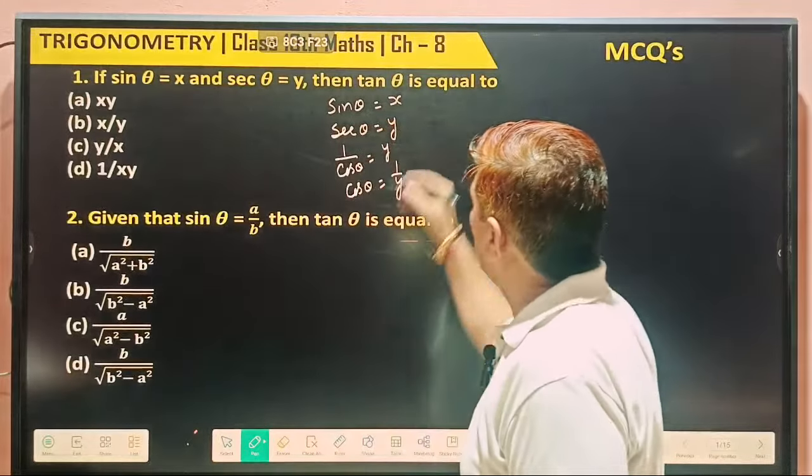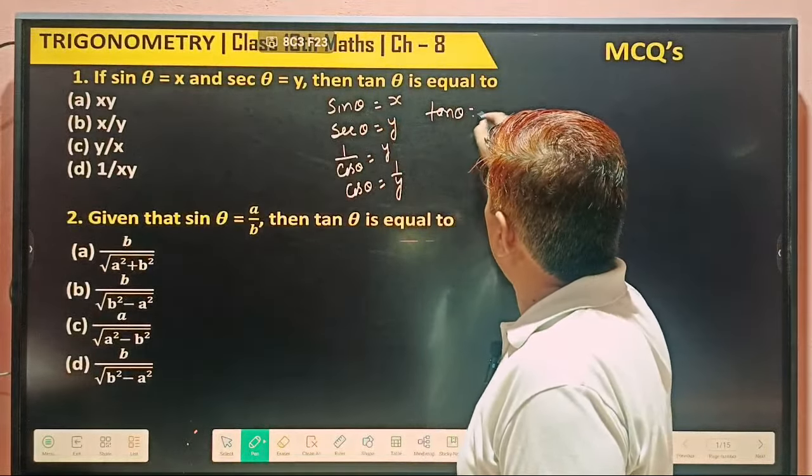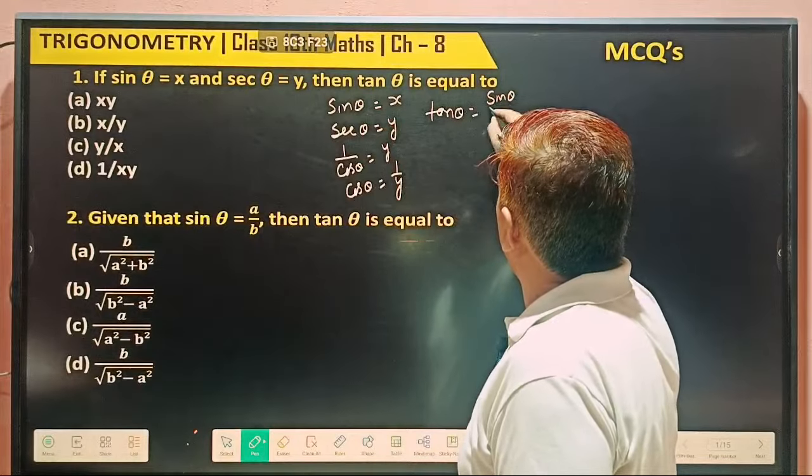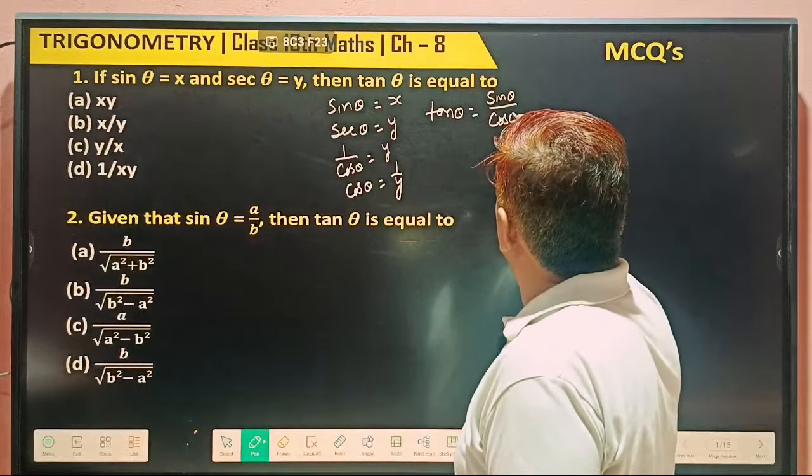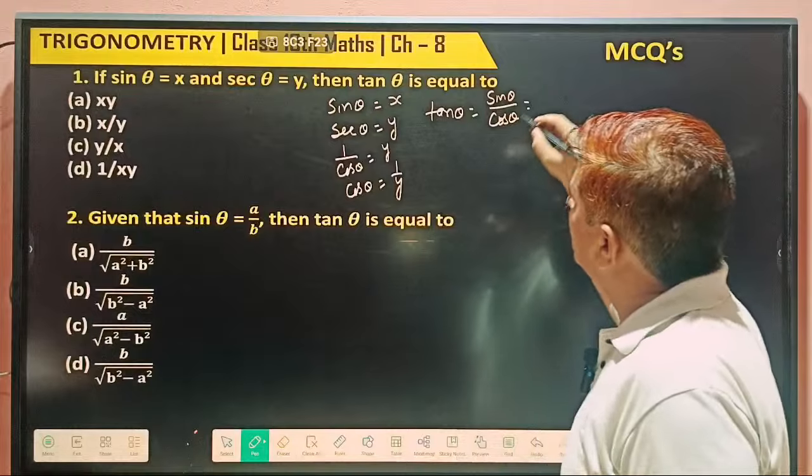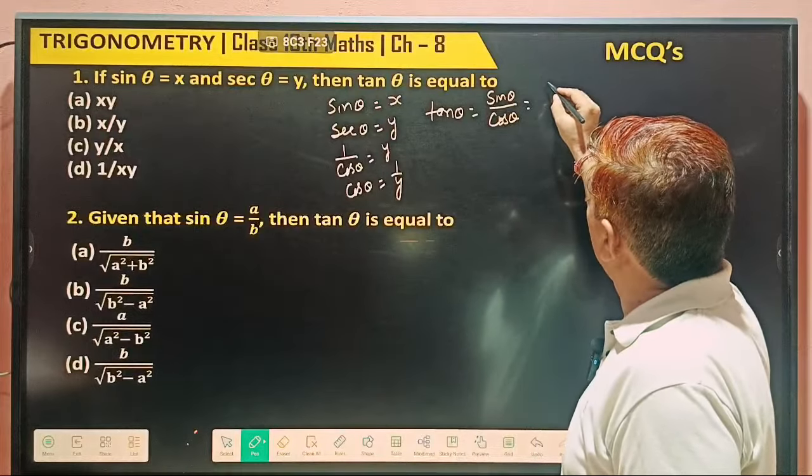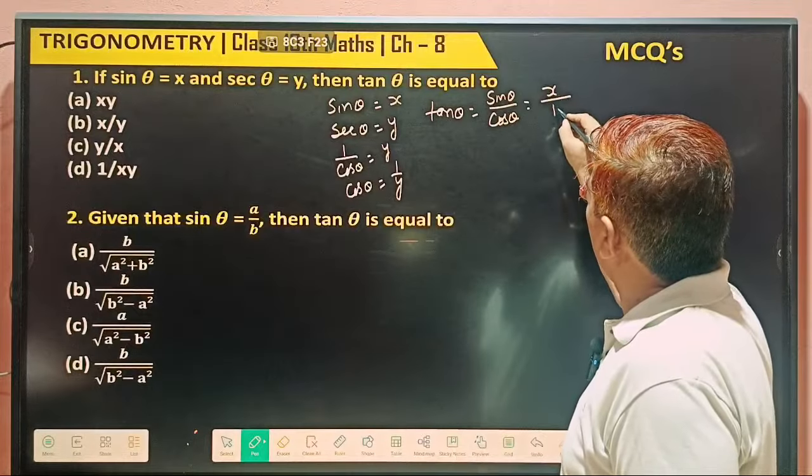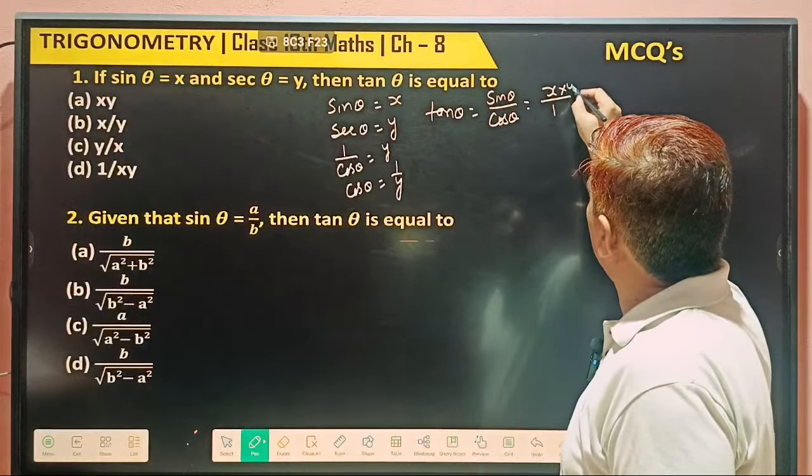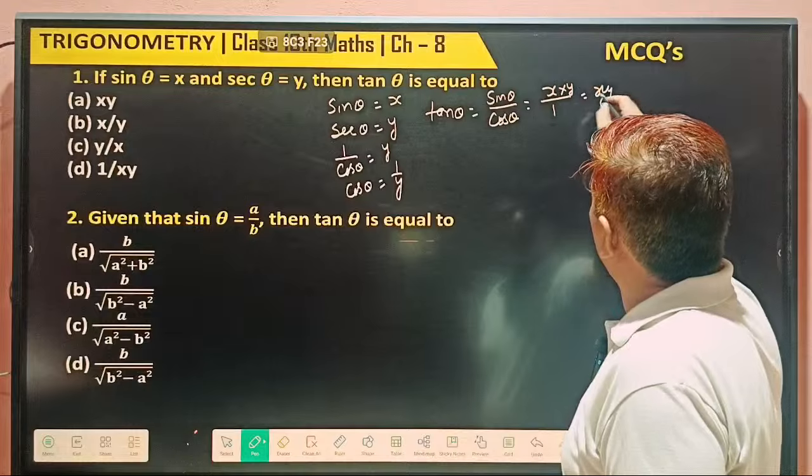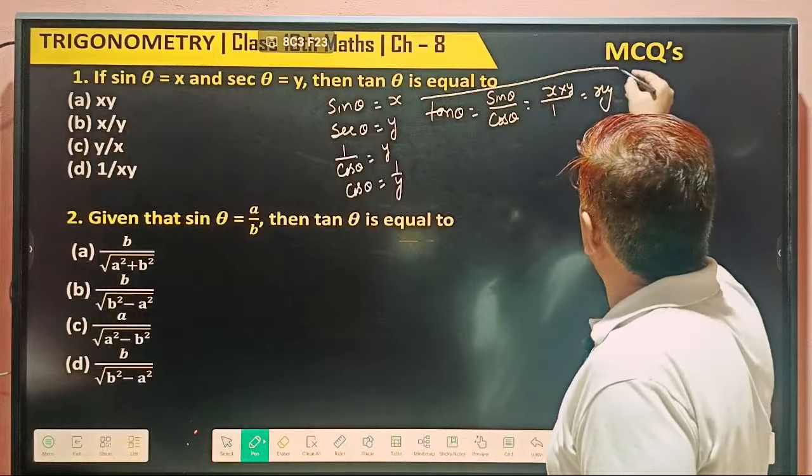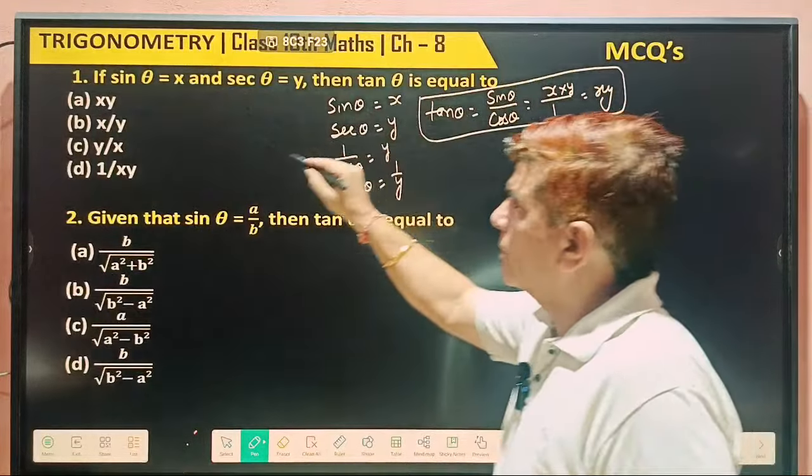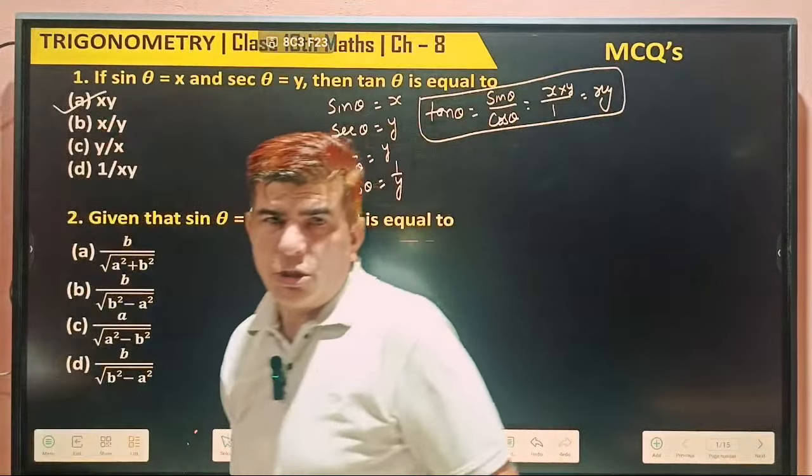What we have to find out? Tangent θ. So tangent θ is equal to sin θ by cos θ. So what's your sin θ? x. And what's your cos θ? 1 over y, so y goes to the numerator. So what becomes? x times y. So xy is our answer. Understood?